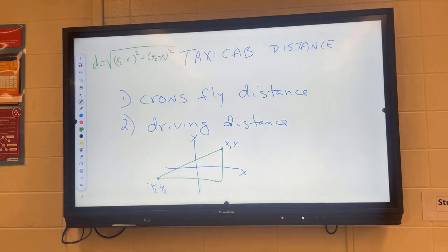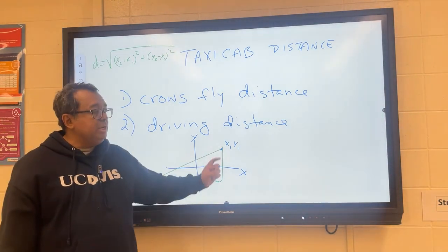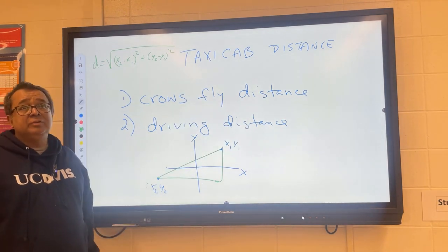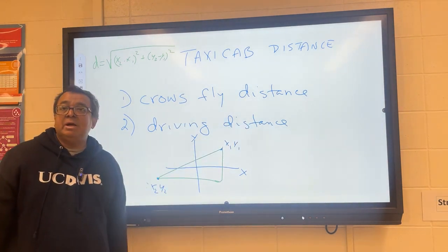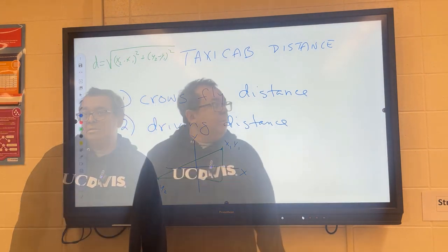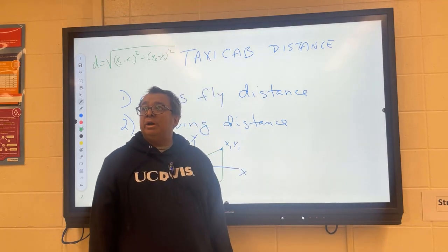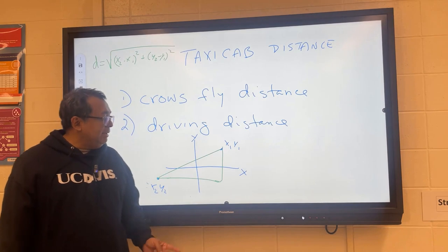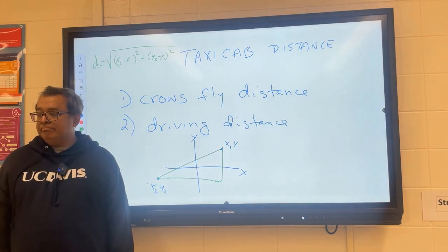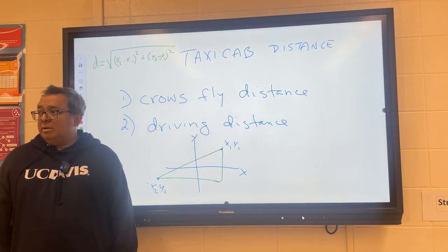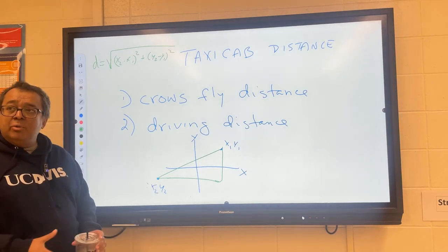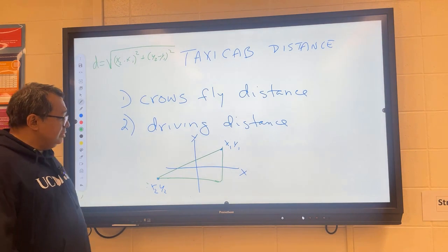Now let's talk about driving distance. If this was a location on the map and this was another location, and we were going from here to there — imagine it's several hundred miles — this would typically not be the crow's fly distance. Why not? Because you can't go in one straight shot. You have to stick to roads.